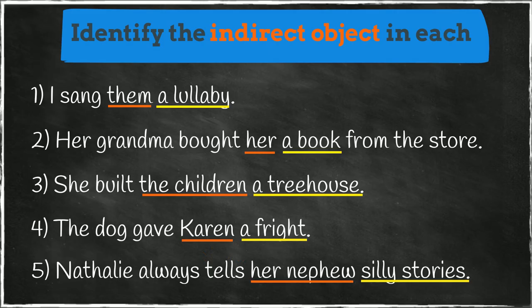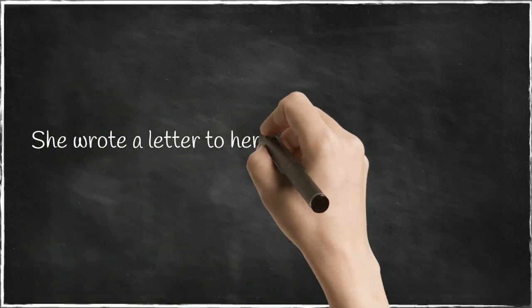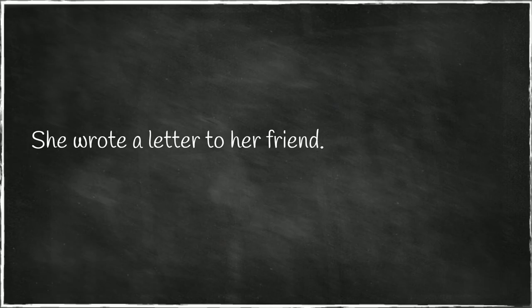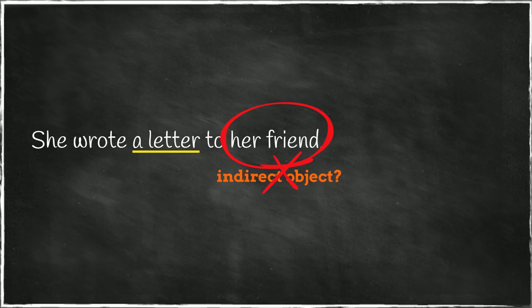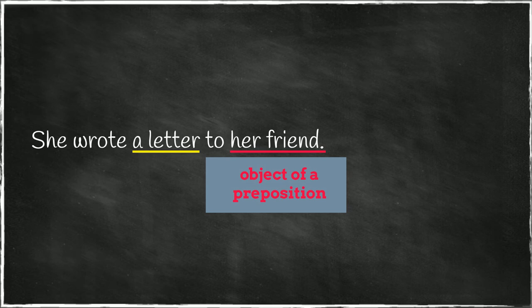Notice that if a sentence has both a direct object and an indirect object, the indirect object is placed first. Sometimes it can look as though the indirect object comes after the direct object. For example: she wrote a letter to her friend. The direct object is a letter, and if we ask ourselves to whom, it seems as though the indirect object must be her friend. However, her friend is not an indirect object, even though it is receiving the action. In this example, her friend is the object of a preposition. To her friend is a prepositional phrase, because it begins with a preposition, to. Prepositional phrases are not indirect objects, although they serve the same purpose.